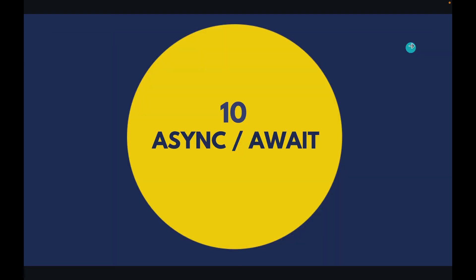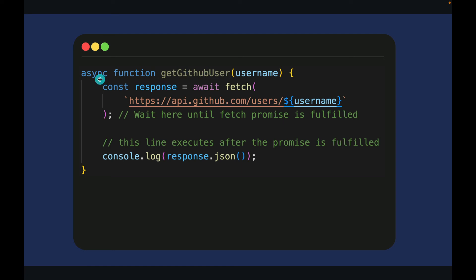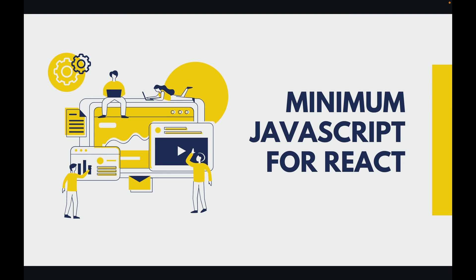Async/await syntax. You can make any function an async function. Here I'm making this getGitHubUser function an asynchronous function — I'm fetching data from GitHub by passing the username. The await keyword makes this fetch call wait until we have the data from the server side. Once we have the data, the next line executes and we show the response to the user. Using async and await we can load data from the server side and do front-end to back-end interaction in a synchronous way. That's the minimum JavaScript for React in under 10 minutes.